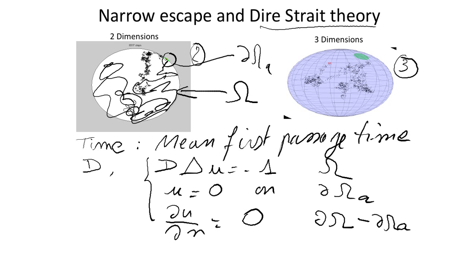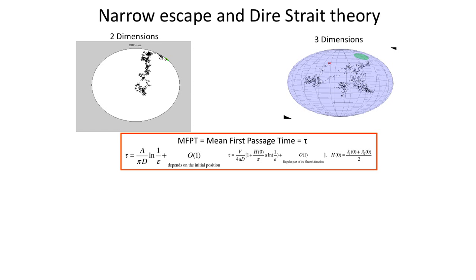The question is basically the same in dimension 3. Just to give you the results, we found through asymptotic analysis that the time tau to escape is proportional to the area π divided by D, and we have log of 1 over epsilon, where epsilon is the ratio of the absorbing to the total boundary in the limit of this being small. The interesting issue is that in dimension 3, it's not log that prevails.